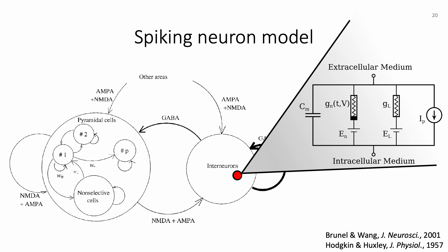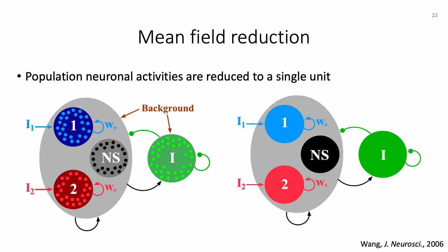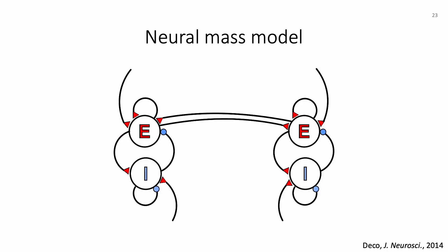One approach is mean field reduction. The idea of mean field reduction was first introduced in statistical mechanics, where we reduce the system to a few but effective variables. Each small dot represents a single neuron; after applying mean field reduction, the activities of a group of neurons can be reduced to a single unit. After mean field reduction, each brain region can be modeled with just two variables—one for overall excitation and one for overall inhibition—with interactions within a region and connections between different regions.